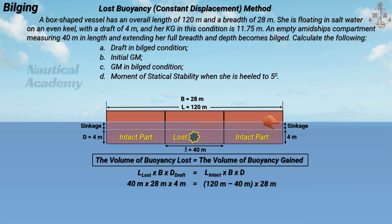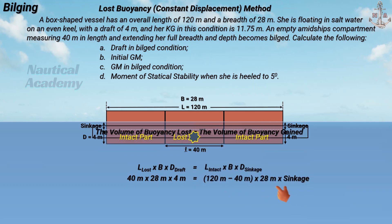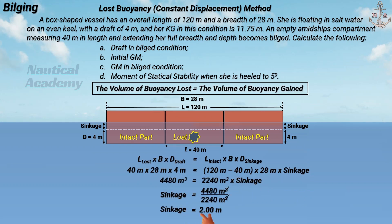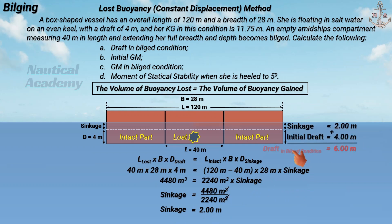The depth in this case refers to the increase in draft after flooding, which refers to sinkage. Transposing the equation, the sinkage is 2 meters. Adding the sinkage to the vessel's initial draft, the draft in the bilged condition is 6 meters.